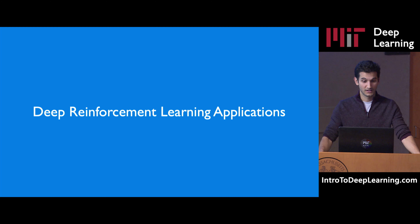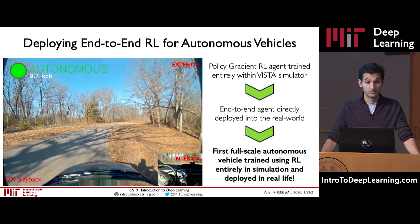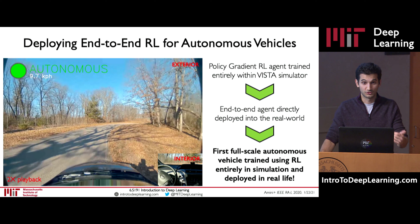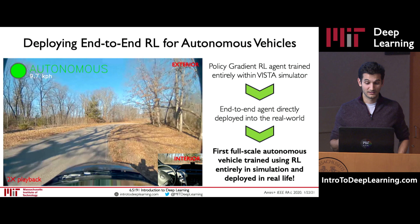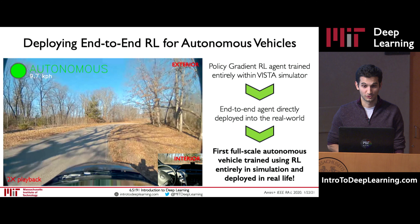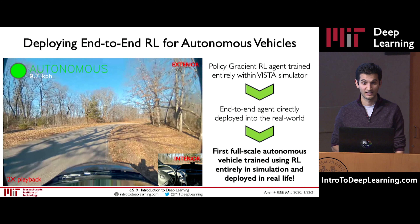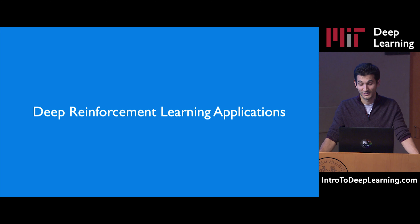This represented the first time ever that a full-scale autonomous vehicle was trained using only reinforcement learning — no human supervision — entirely in simulation and then deployed directly into reality. In lab three, you'll have the ability to play around with the simulator, train your own agents using policy gradients or whatever RL algorithm you like within simulation, and design your own autonomous vehicle controllers. The winners will be invited to put their policies onboard the car — you can say you trained an entire autonomous vehicle end-to-end using a single neural network and deployed it onto a car driving on real roads.